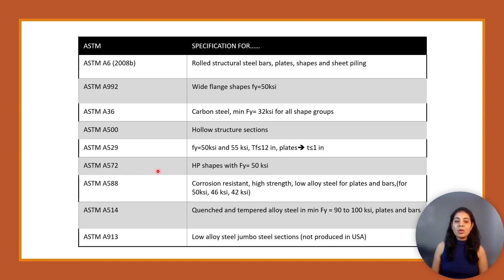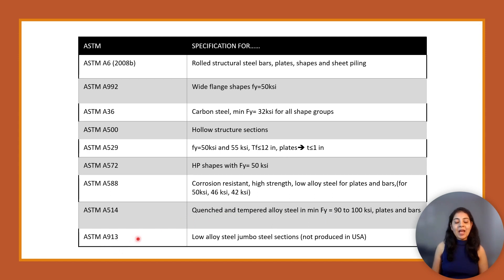ASTM A572 consists of HP shapes with Fy equal to 50 ksi. ASTM A588 consists of corrosion-resistant high-strength low-alloy steel for plates and bars with yield stresses of 50 ksi, 46 ksi, and 42 ksi. ASTM A514 consists of quenched and tempered alloy steel with minimum Fy equal to 92 ksi for plates and bars. ASTM A913 consists of low-alloy steel jumbo steel sections.